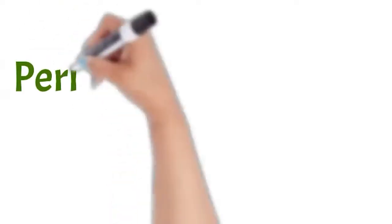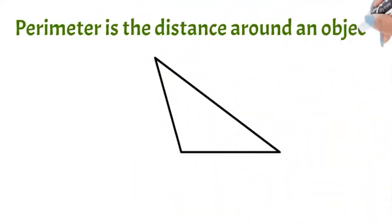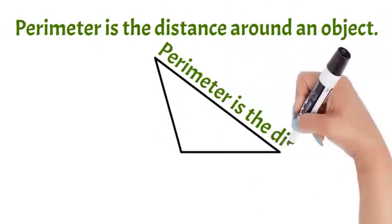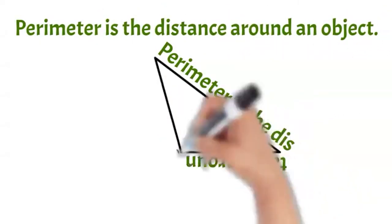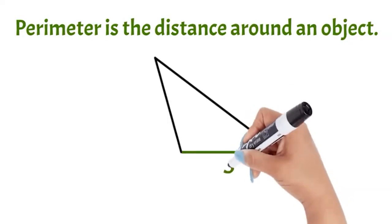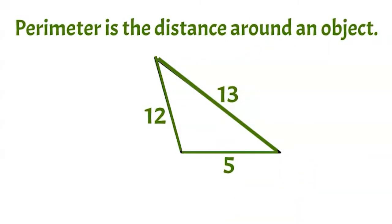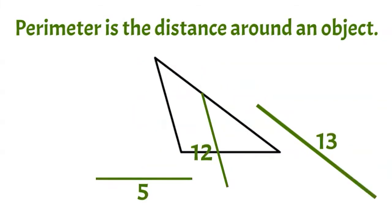Welcome back to Underwater Math. Today we will discuss finding the perimeter of polygons. Remember that perimeter is the distance around an object. The perimeter of any shape can be found by adding up all the side lengths. To find the perimeter of a triangle, you would add up the lengths of all three sides.